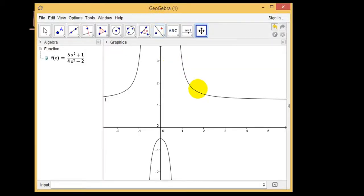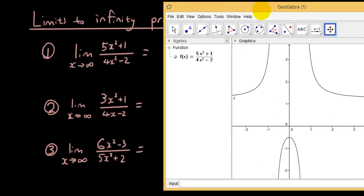So here is the graph of the equation 5x² + 1 over 4x² - 2. And what is the question? Well the question is, as x approaches infinity, what does y approach?